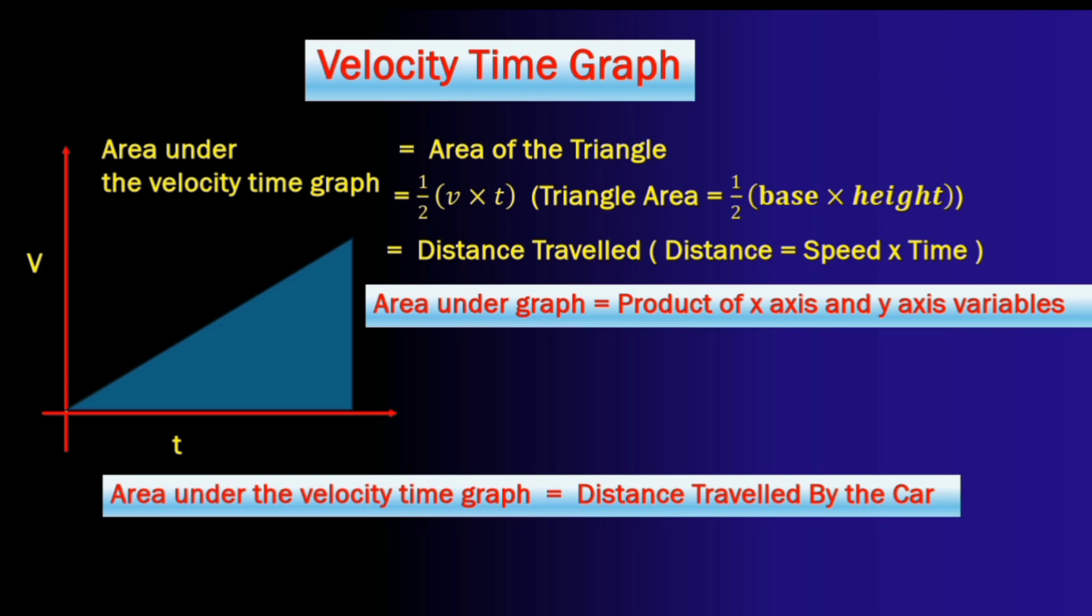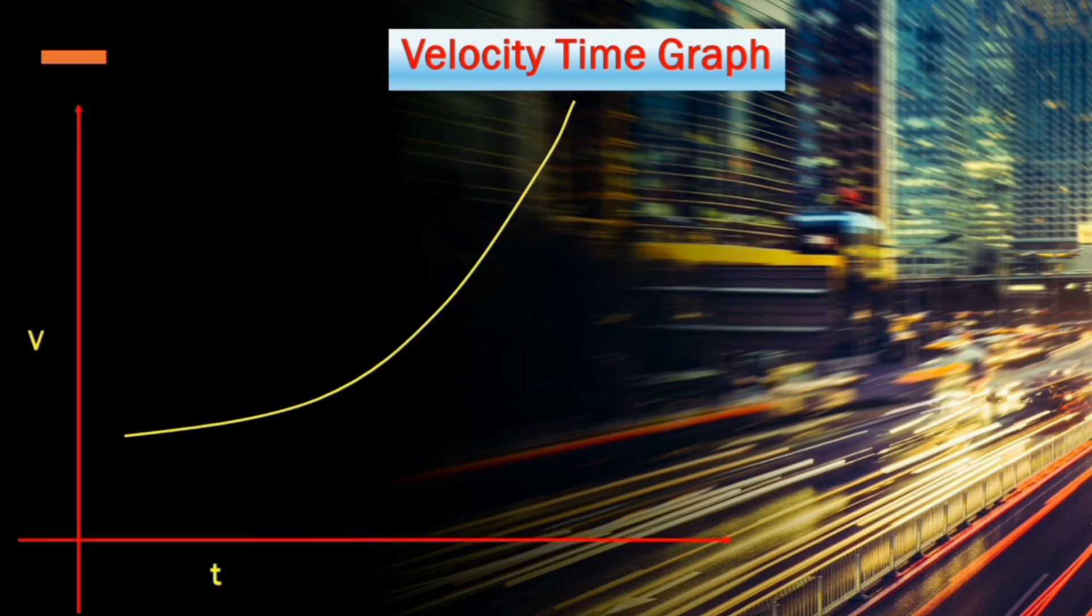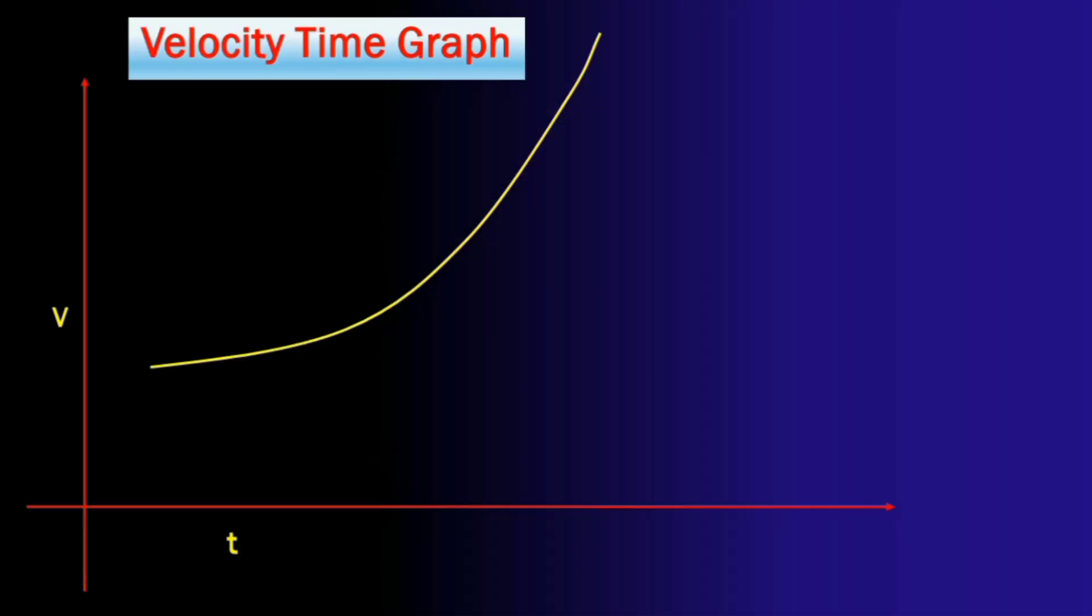So it's very easy to calculate the distance of the car from the velocity time graph. But in most real life cases the velocity time graph is not a straight line like this. Instead it's usually a curve like this. In this case what will be the distance traveled?